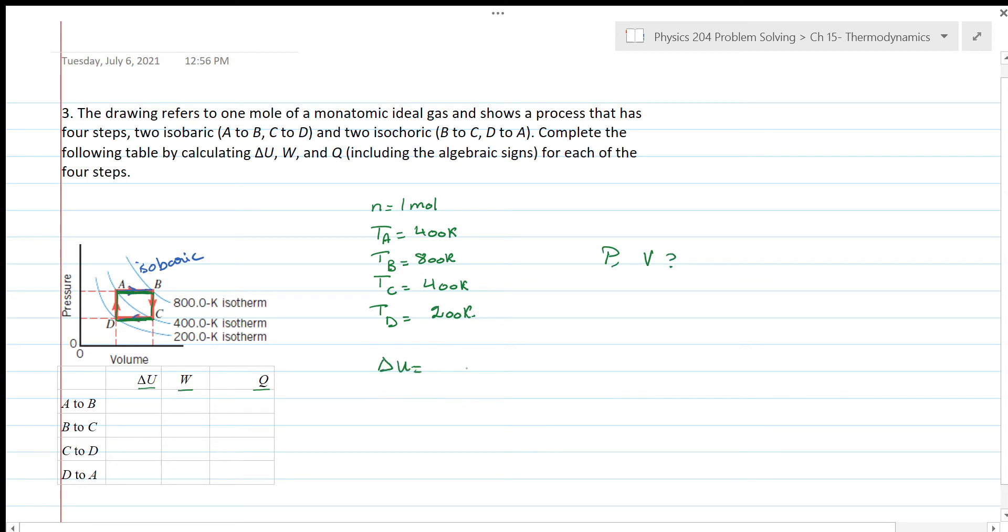Let's start by stating some equations. We know the change of internal energy, since this is a monoatomic ideal gas, we can write it as 3 over 2 nR delta T, of course.